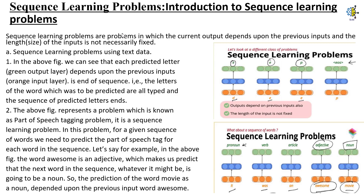Part of speech tagging is a sequence learning problem in which, for a given sequence of words, we need to predict the parts of speech tag for each word in the sequence. For example, in the above figure, the word 'awesome' is an adjective, which makes us predict that the next word in the sequence, whatever it might be, is going to be a noun. So the prediction of the word 'movie' as a noun depended upon the previous input word 'awesome'.